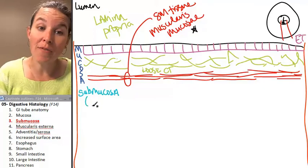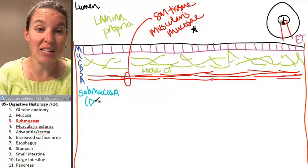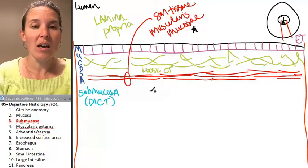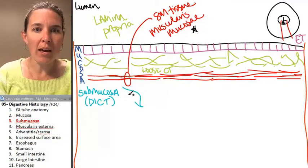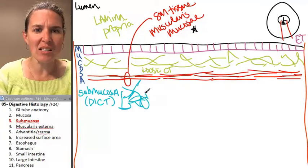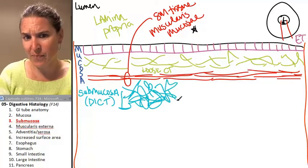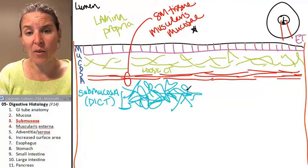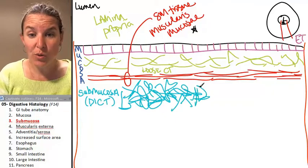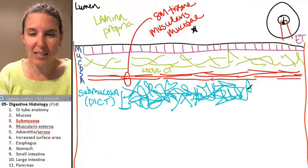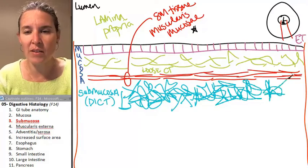Most often the submucosa is made of dense irregular connective tissue — most often. And I'm telling you right now, when you see the dense irregular connective tissue, it's extremely obvious.